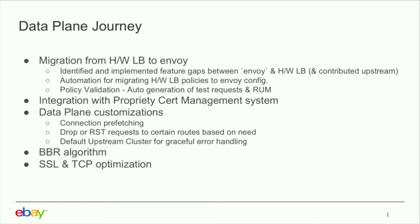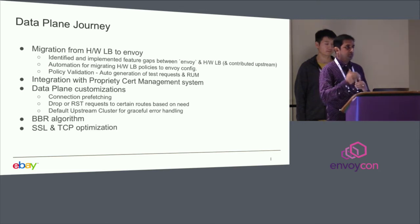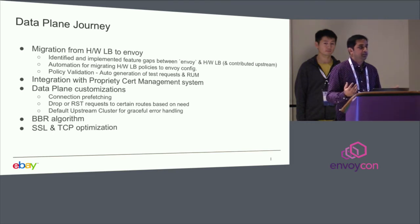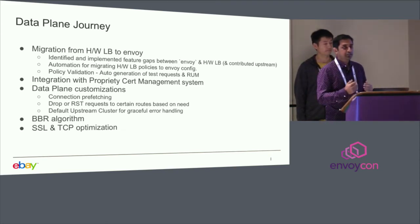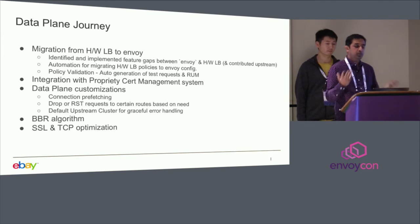We also had use cases where we wanted to drop or reset a particular connection — for security reasons or otherwise — without sending it all the way up to the DC. We created an L4 filter that sits in Envoy and watches for unwanted connections, then drops or resets them at the POP. Additionally, if connectivity from the edge to the data center is bad or goes down, we didn't want customers to see 503 upstream timeouts. We came up with a feature called the default cluster to gracefully handle this and show users a better experience rather than a blank page.